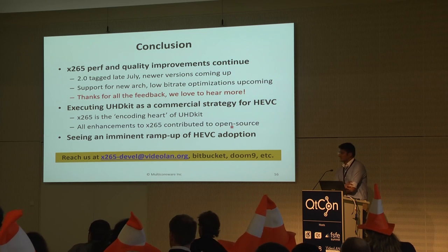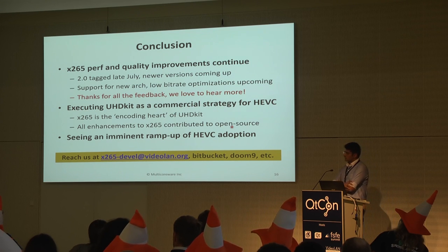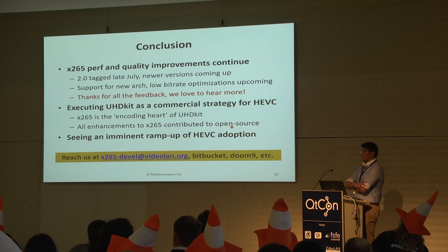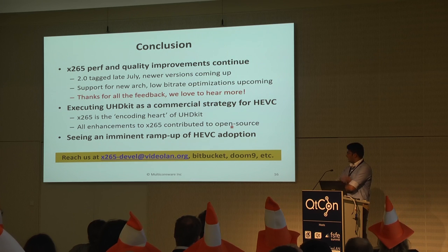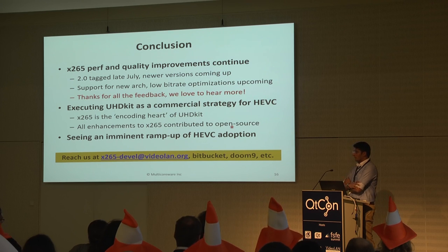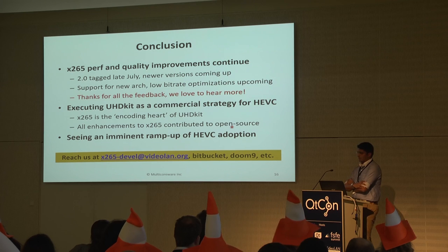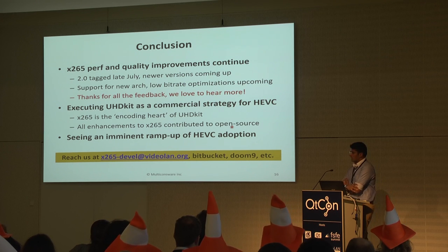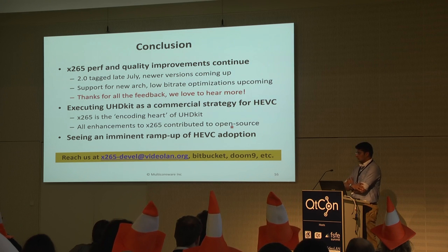Q&A: A question was raised about whether USDKit's framework could swap X265 with a different encoder. The speaker responded that ideally it should be possible, but today USDKit is implemented only with X265. For some codecs, certain flavors might not make sense — for example, parallel encoding with x264 doesn't make sense since x264 is already very fast. The constant performance encoder flavor could make sense for other codecs, but would need careful tuning.